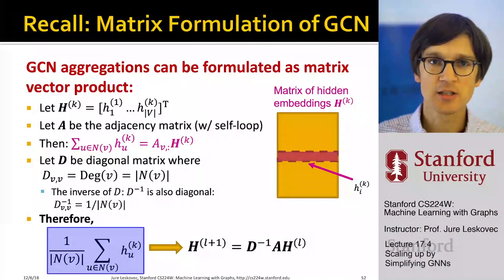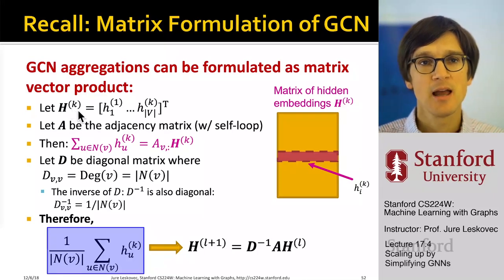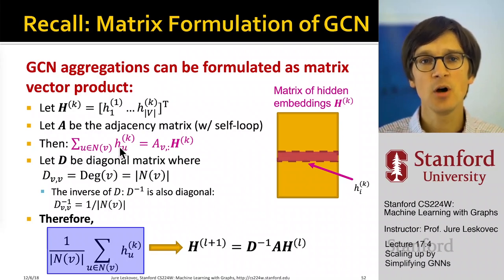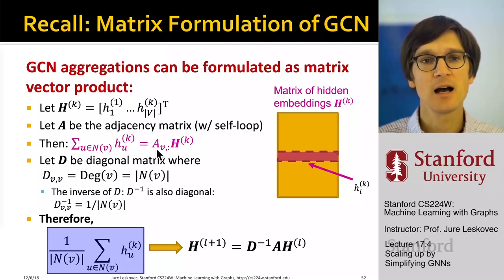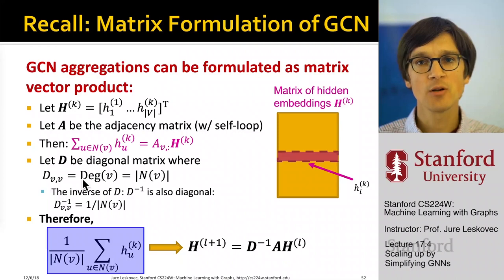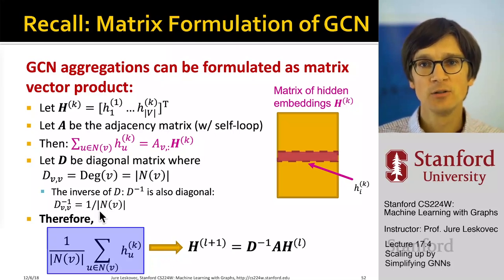The benefit of GCN is that it is so simple we can write it in matrix form. We stack the embeddings into an embedding matrix. A is our adjacency matrix where every node also has a self-loop. The sum over the neighbors of a given node can be written as a product between the adjacency matrix A and the embedding matrix H. We also define D to be a diagonal matrix where on the diagonal we have the degree of every node. D inverse puts 1 over the degree on the diagonal entry for every node.